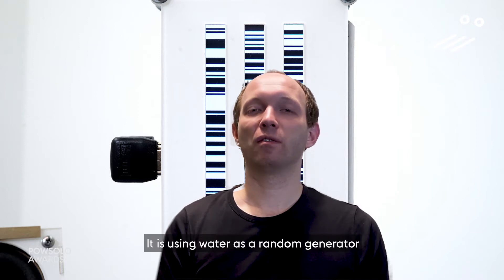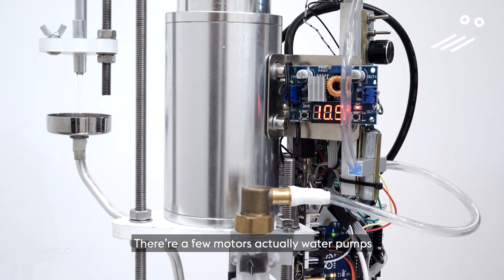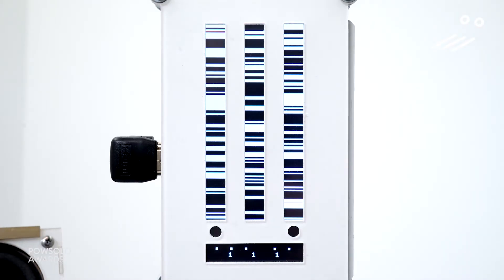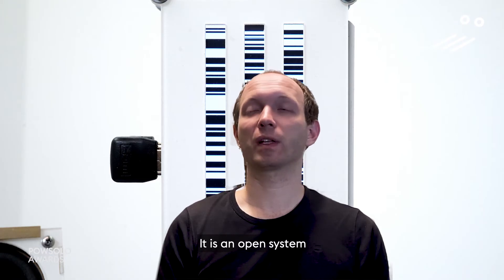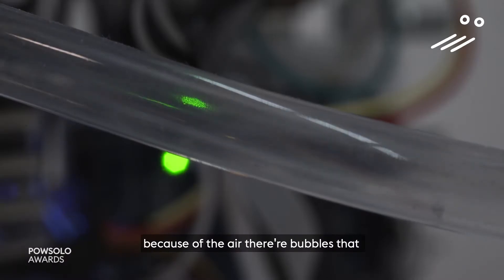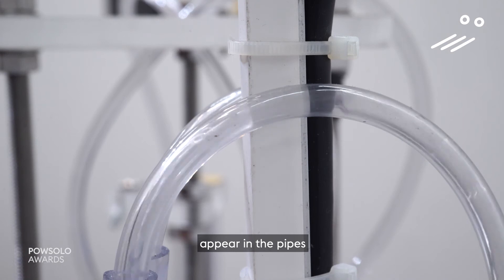It uses water as a random generator. There are a few motors, actually water pumps, creating water flow in an open system. It sucks a bit of air inside of that float, and because of the air there are bubbles appearing in the pipes.